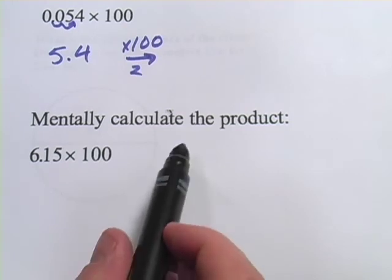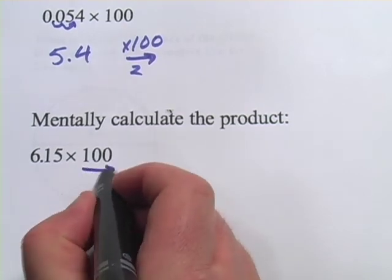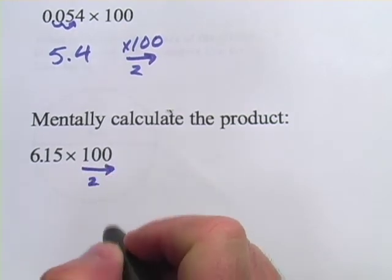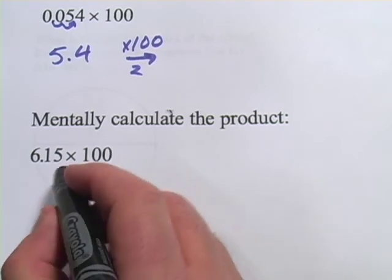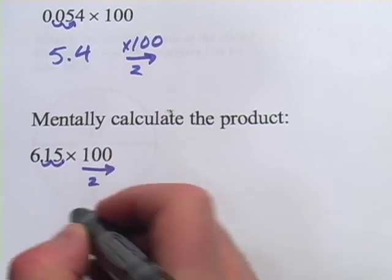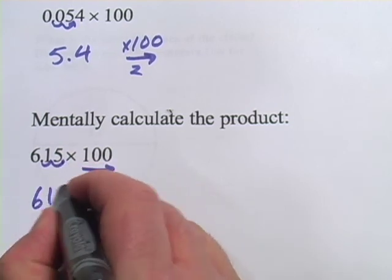Last one. Mentally calculate the product. It's times 100, so we're going to move the decimal place 2 points. If it was 1,000, you'd move it 3. 10, you only move it 1. Here we've got 100, so we're going to move it 2. So 1, 2, and we get 615.